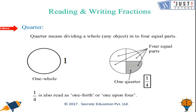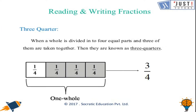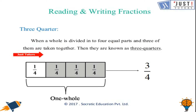Three quarters is when a whole is divided into four equal parts and out of those four parts, three parts are used. When a whole is divided into four equal parts and three of them are taken together, they are known as three quarters.